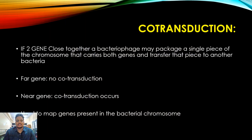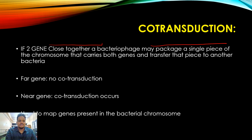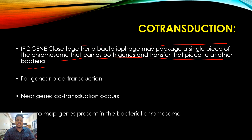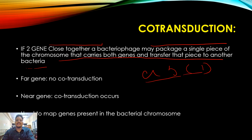In co-transduction, if two genes are close together, the phage can package them as a single piece of chromosome and carry both genes to another bacterium. We look at whether two or three genes that are near each other are being transferred together — genes A, B, C, D — and we check which ones are coming together.